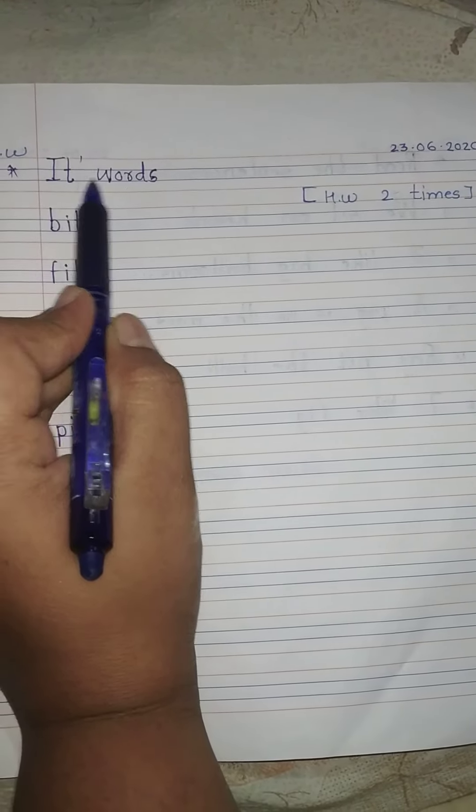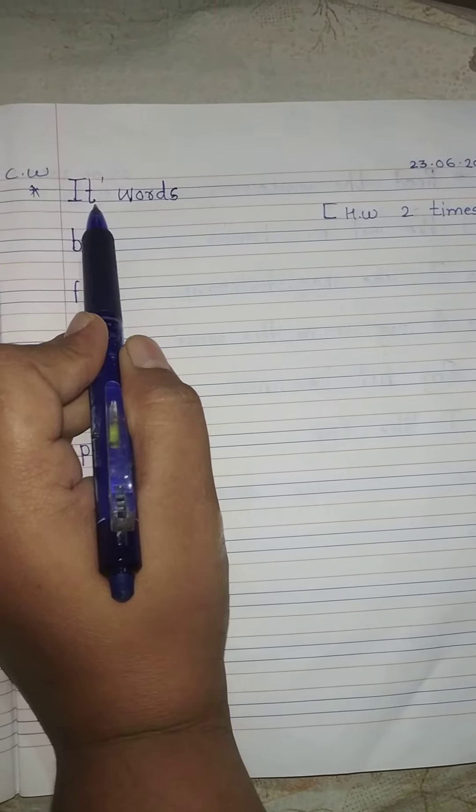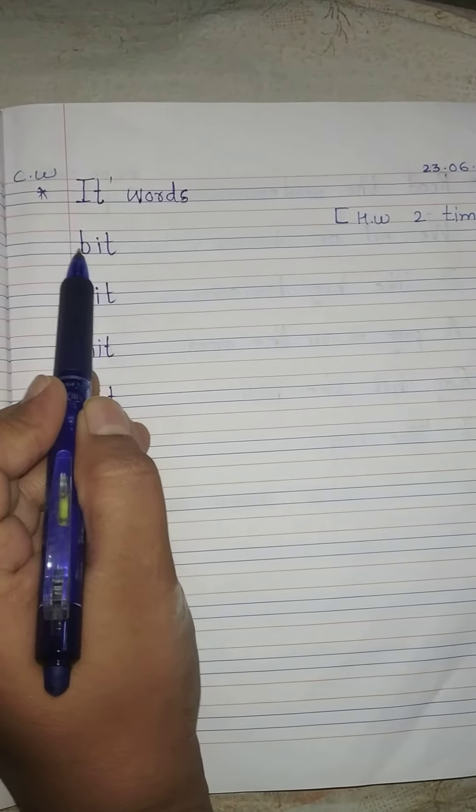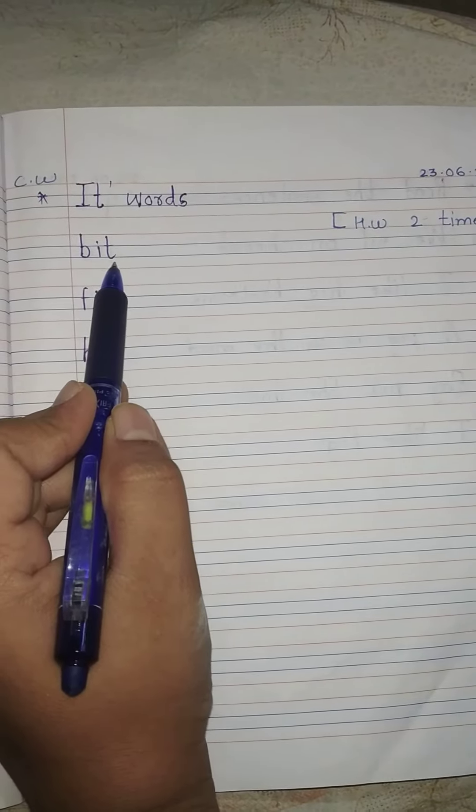Now I.T. words. I.T. it. B says B. B. It. bit. B.I.T. bit.